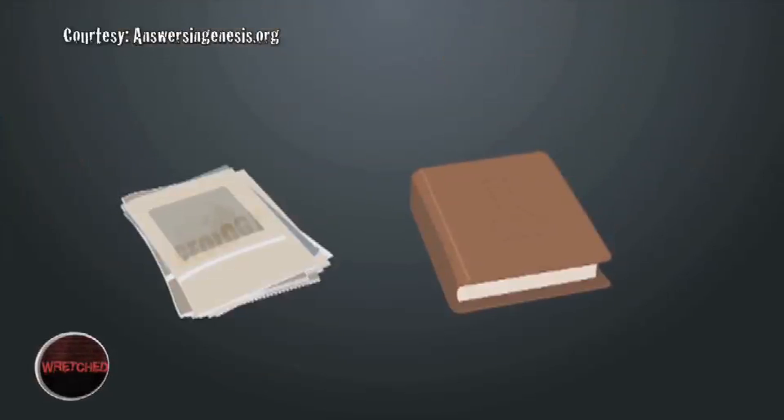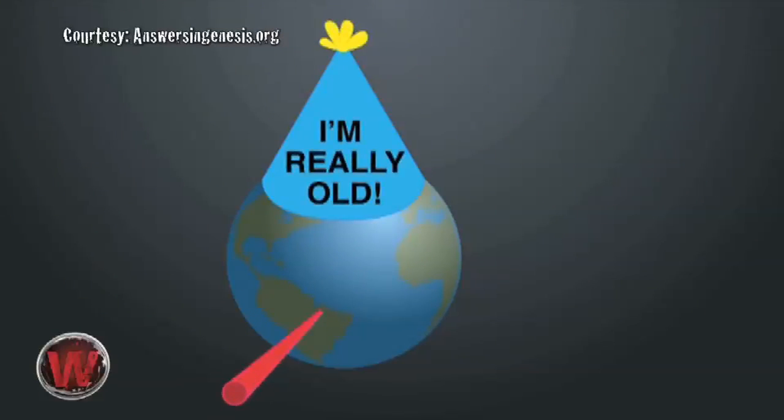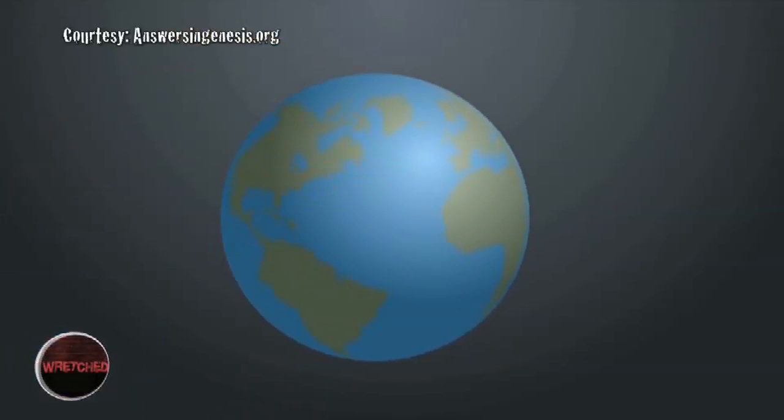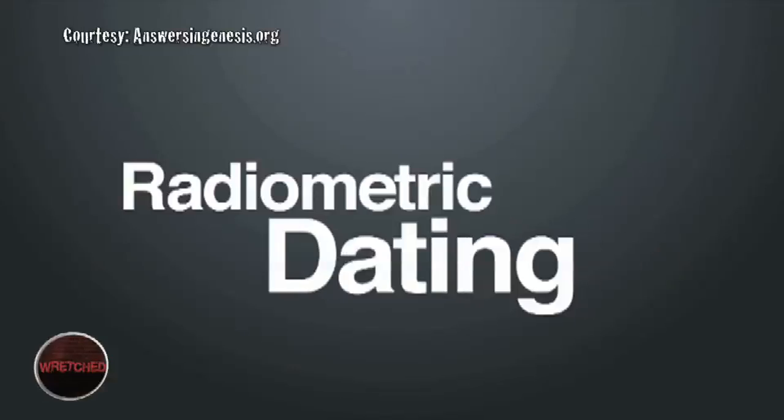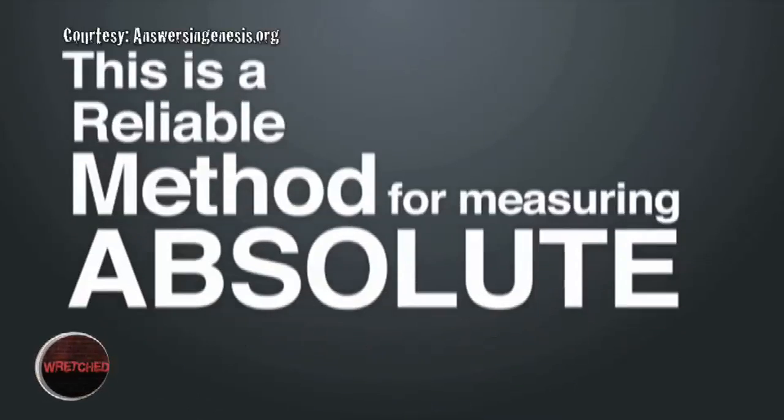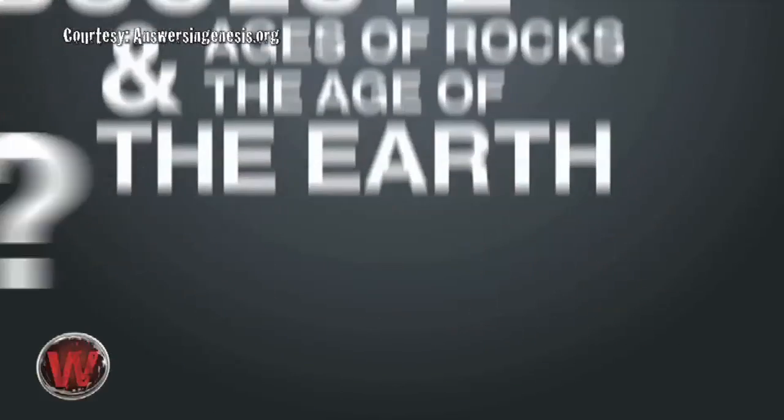Nearly every textbook and science magazine teaches that the earth is billions of years old, and the primary dating method used for determining this is what is called radioisotope dating or radiometric dating. Now this is a reliable method for measuring absolute ages of rocks and the age of the earth, right?